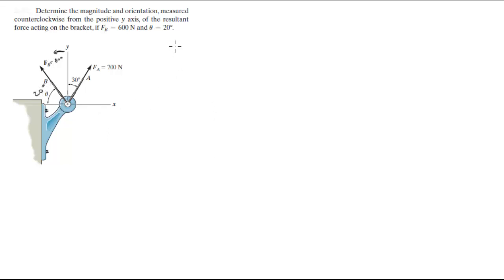Alright guys, this is easy, just break it down. F_A is equal to 700 sine of 30 i plus 700 cosine of 30 j. Now, if you solve this you're going to get that is equal to 350 i plus 606.2 j.